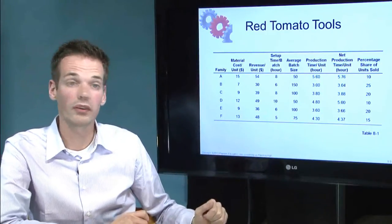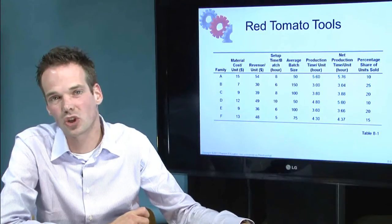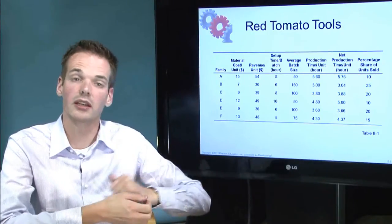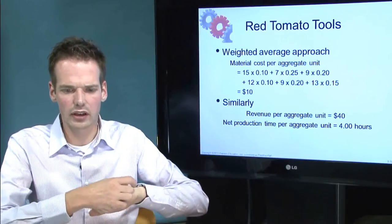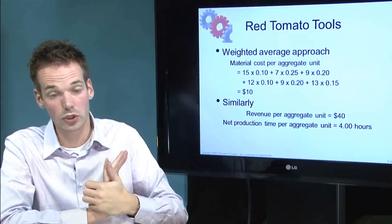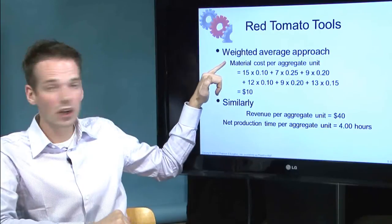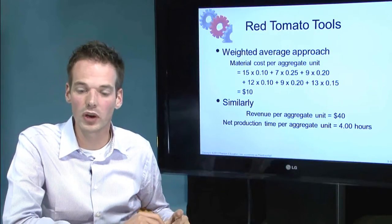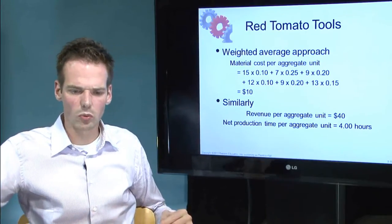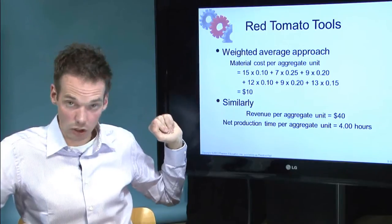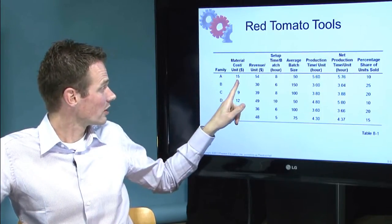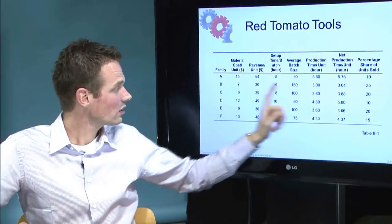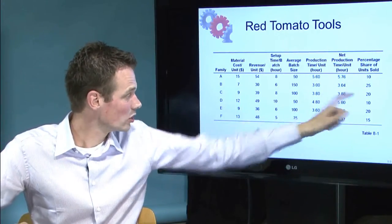The last column is also very important because it shows the percentage of the total units sold. In aggregate supply chain planning we use the weighted average approach. So what we do is take the material cost, the revenue, and the net production time and calculate the weighted average. For example, for material cost: 15 times 0.10, 7 times 0.25, 9 times 0.20, and so forth.